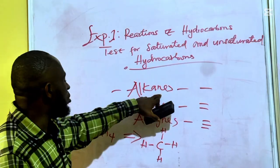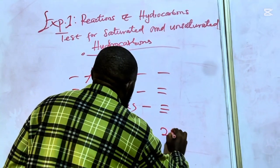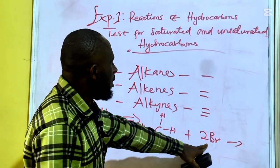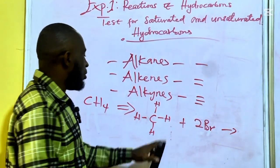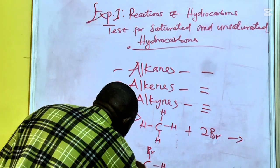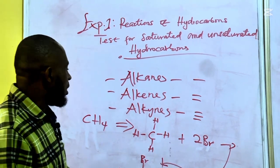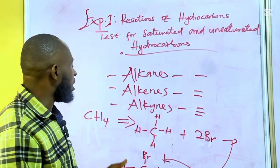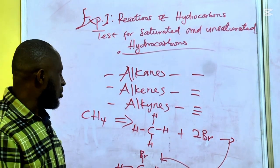Alkane compounds can only undergo substitution reaction. When we react this with two moles of bromine, what happens is that the two moles of bromine substitute the hydrogen found on the carbon atom. We then have CBr2H2 as our product — this is a substitution reaction. Alkanes do not undergo any other reaction apart from substitution reaction, and most times they are unreactive. The product formed is dibromoethane.